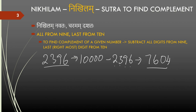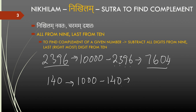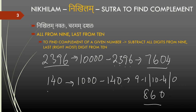One potentially confusing example could be if I have 140. Since I have a zero at the end, I will ignore the zero, apply the rule, and add the zero back. So here, we are trying to calculate 1000 minus 140. I will ignore the zero first, apply all from 9 last from 10: 9 minus 1, then 10 minus 4, and then add back the zero. So that becomes 860. So 860 is the complement of 140.